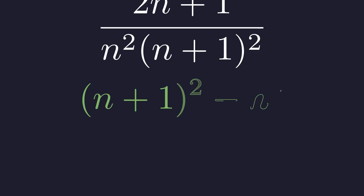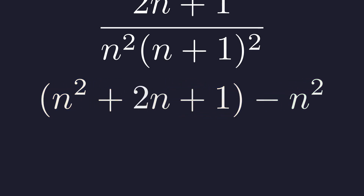Let's work through this expression. The key is to expand the squared binomial and see what we get. First, let's expand the square of n+1. This gives us n² + 2n + 1.